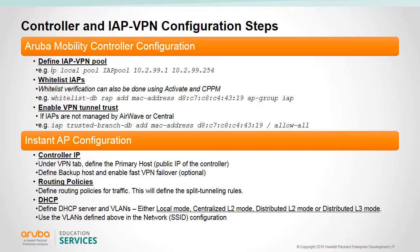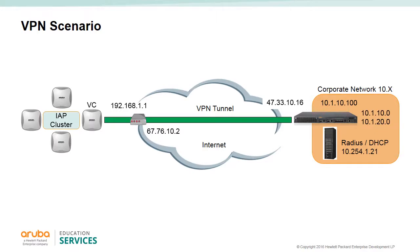Here's an overview of the steps for configuring an Aruba mobility controller and the IAP for IAP VPN. On the mobility controller, you must define a VPN pool, define a whitelist to verify that the IAPs are authorized, and enable the VPN tunnel trust if your IAPs are not managed by Airwave or Central. On the IAPs, you need to configure the controller's IP address, add routing policies, and set up DHCP in either local mode, centralized L2 mode, distributed L2 mode, or distributed L3 mode.